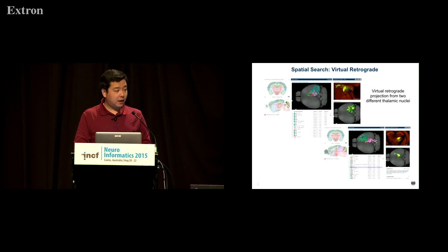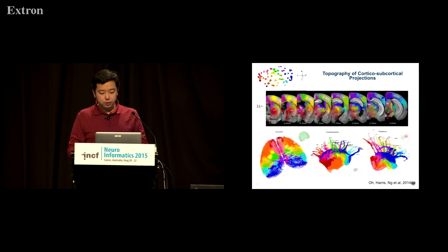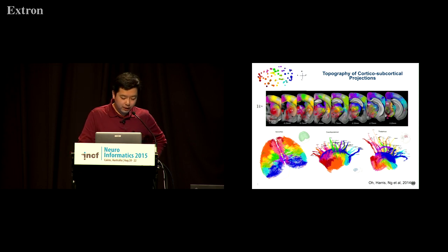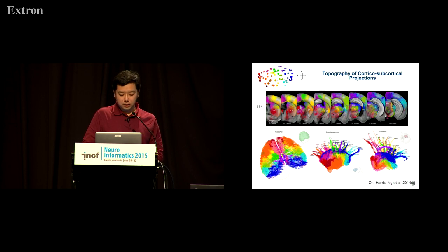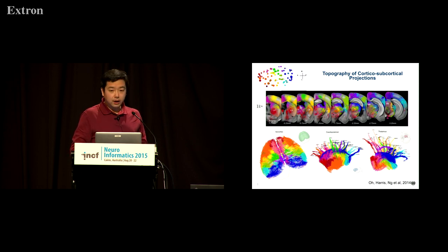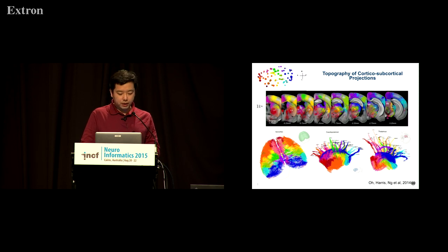This is effectively a virtual retrograde map. Using this spatial search, we can do something even more interesting — for example, visualizing the topography of cortical to subcortical projections. About 80 injection sites through the brain are color-coded according to their location. The middle and bottom images are generated by doing spatial search repeatedly within the isocortex, striatum, and thalamus. For each voxel, we retain the highest-ranking injection site and color that voxel together with streamlines to the color of that injection site. This picture shows the primary paths between cortical and subcortical connections.